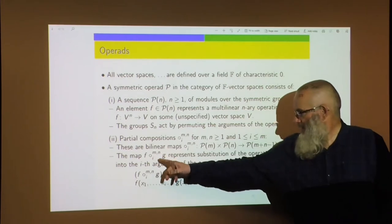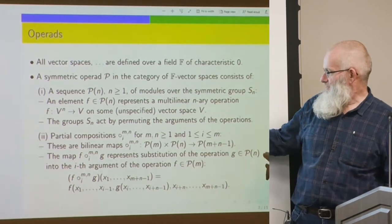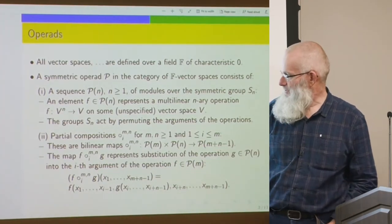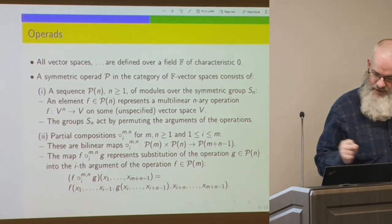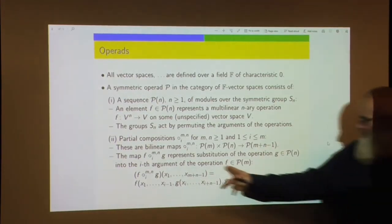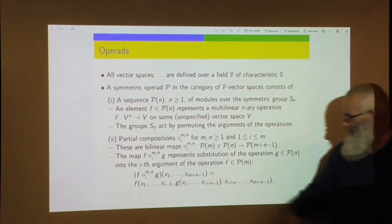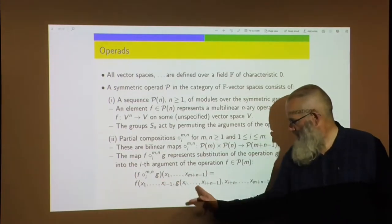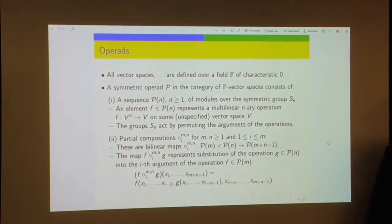So f-circle-i represents substitution of the operation g, which is an n-ary operation, into the i-th argument of the operation f. When we do this, we lose one of the arguments of f and replace it with the n arguments of g — that's where we get m plus n minus 1. In the composition, we have m plus n minus 1 arguments, and we re-index the variables so that we have the identity permutation.